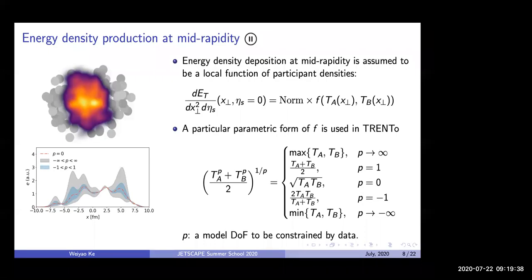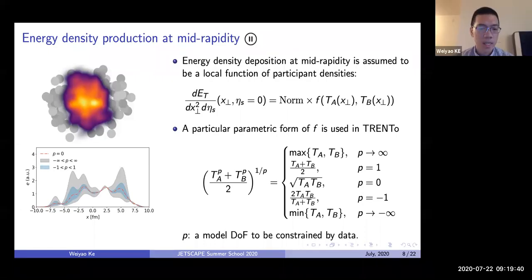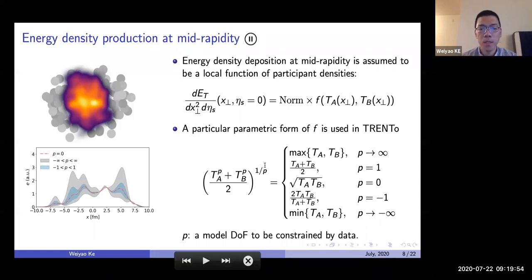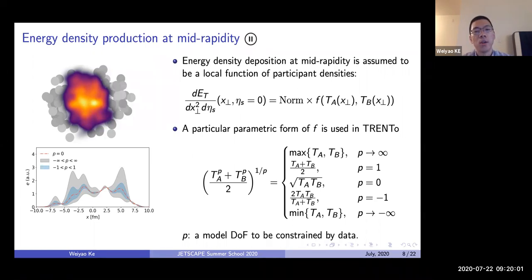There are extensions to this picture, either launching into another direction where we can also prioritize the rapid dependencies, or putting in sub-nucleonic fluctuations. Either of those extensions will introduce more parameters, but here I'm just introducing the simplest version of this model.